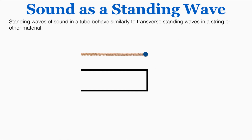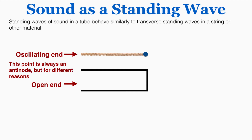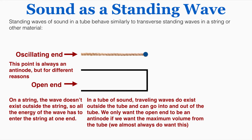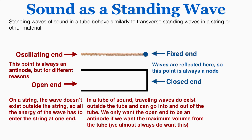Standing waves of sound in a tube behave similarly to transverse standing waves in a string. In most problems, if we have a tube with an open end, that open end is going to be an antinode — not because it physically has to be, but because we assume the tube has been designed to get the most sound out of that standing wave. Just like the fixed end of a rope, a closed end of a tube is a place where sound is reflected, and that is always going to be a node on a displacement graph — that is a physical requirement.